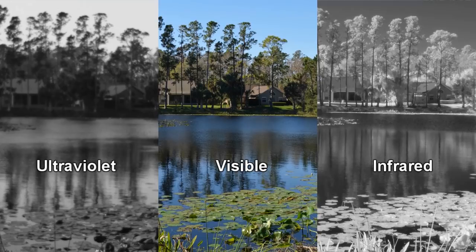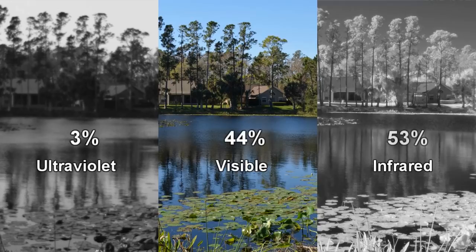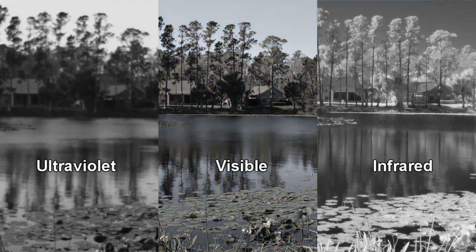Notice that, compared to the other two images, the UV picture is what we call photon starved, being somewhat blurry with less contrast resolution. This makes sense considering that UV light only accounts for 3% of the total light energy reaching the Earth's surface, with 44% being visible and 53% infrared. As we are interested in the relative absorption and reflection of the visible, ultraviolet, and infrared portions of the spectrum, let's convert the center image to black and white so we're comparing apples to apples.